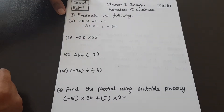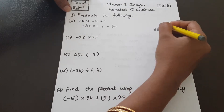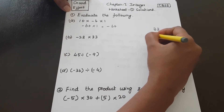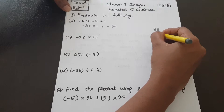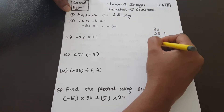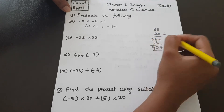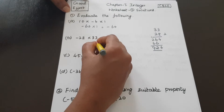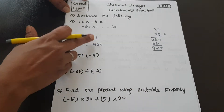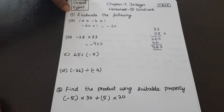Next: minus 28 into 33. 28 is a negative integer and 33 is a positive integer. 28 multiplied by 33: 28 times 33 gives 924. But minus into plus gives minus. So the answer is minus 924.